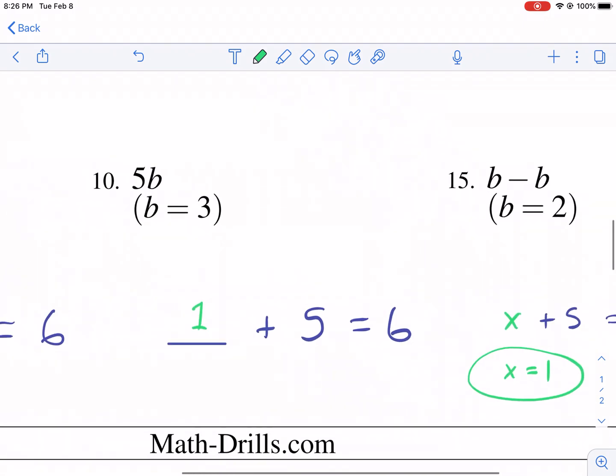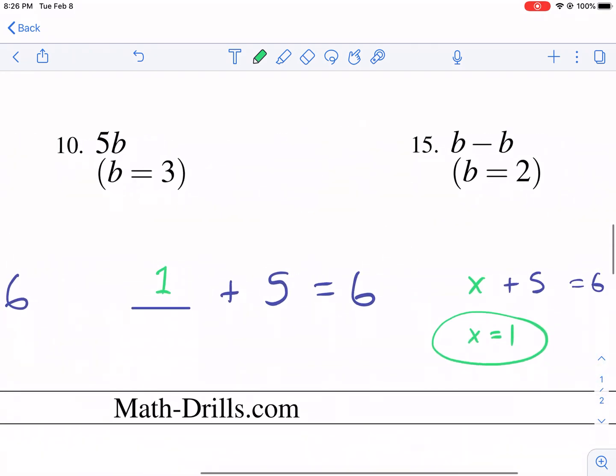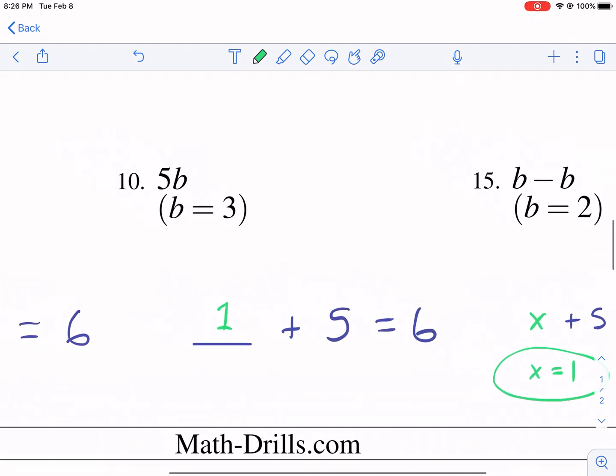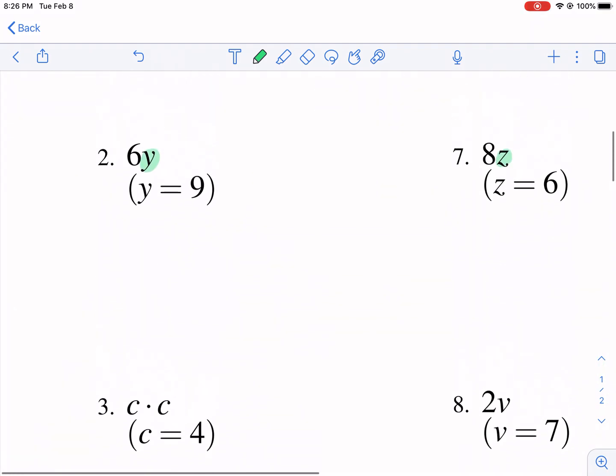So you're thinking, well I'm just not real clear why we use letters. Why can't we just use blanks? Because there's a lot of different letters. So we can have multiple unknowns. All the unknowns won't always be the same. And we can differentiate between the values by using letters of the alphabet.